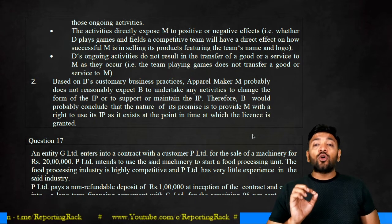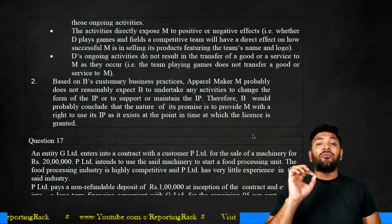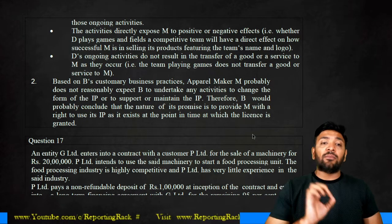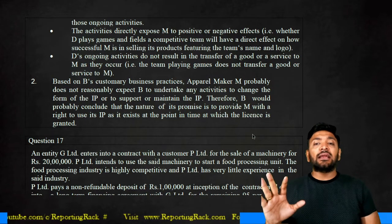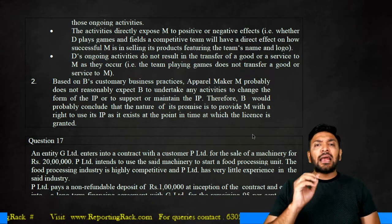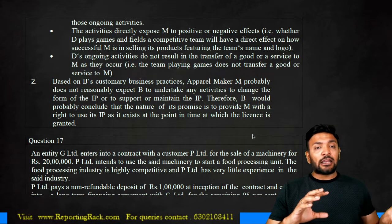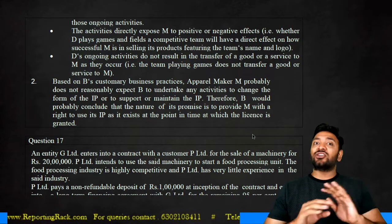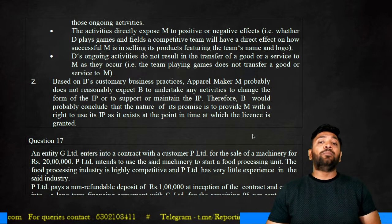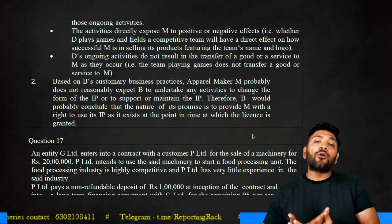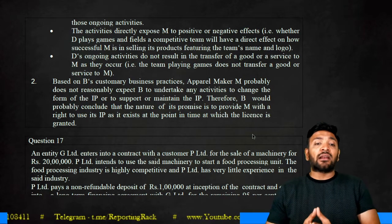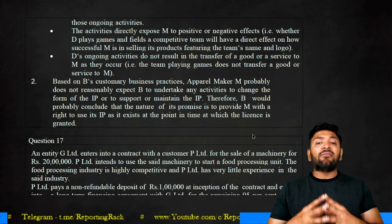These ongoing activities directly expose M to positive and negative effects — whether D plays games and fields a competitive team directly affects how successfully M sells products featuring the team name and logo. The ongoing activities do not result in a transfer of goods or services to M, but they do affect the intellectual property's value. In the second modified scenario, team D is a defunct team — a brand collector entity that acquires IP such as old team names and logos from defunct entities to license them and obtain settlements from unauthorized users, without undertaking any ongoing activities to promote the IP.